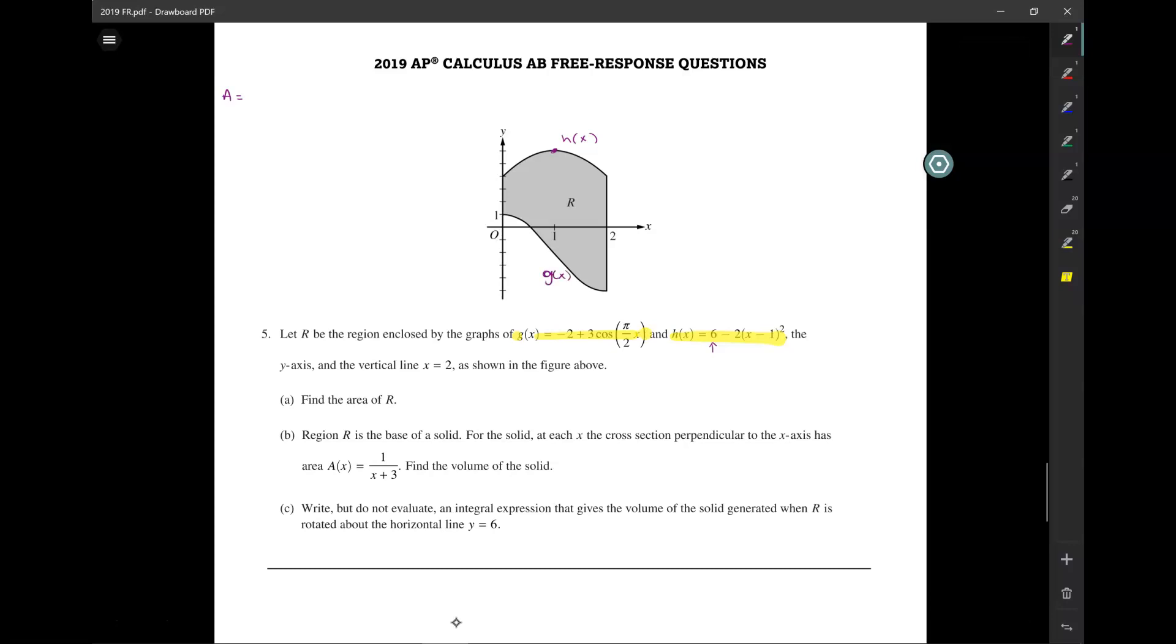Okay, so to find the area, we want to do the integral from 0 to 2 of h of x minus g of x. And this is one where we have to integrate by hand.